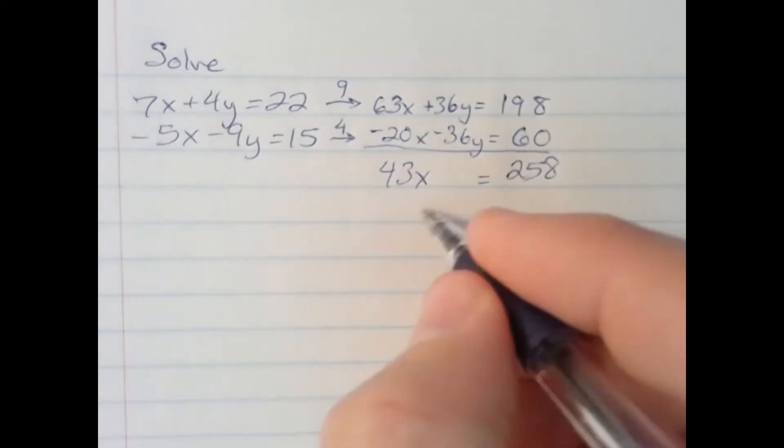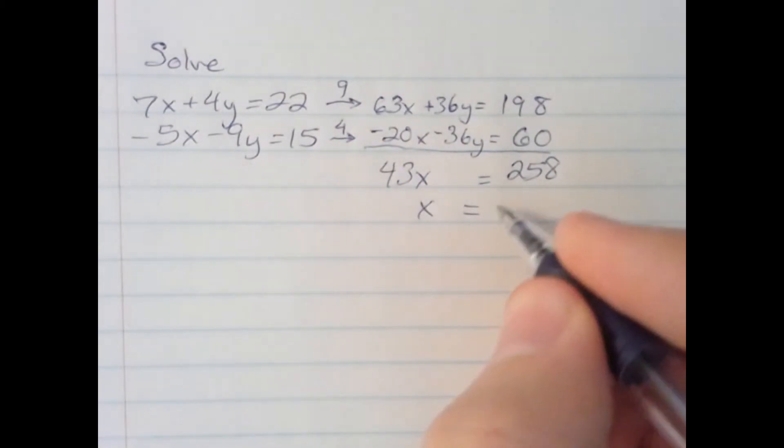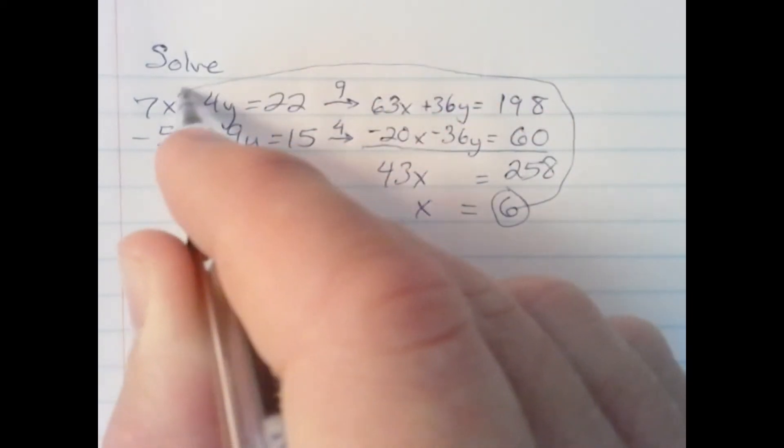I now divide both sides by 43 and get 6. My x coordinate is 6. I'm going to use this x coordinate of 6 and plug it back into the first equation.